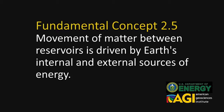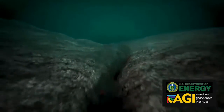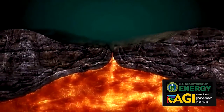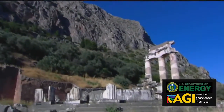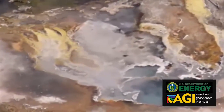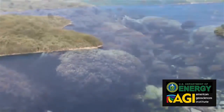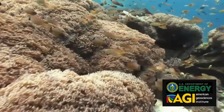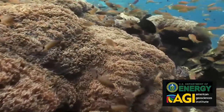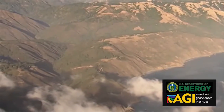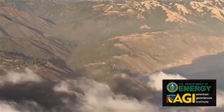Movement of matter between reservoirs is driven by Earth's internal and external sources of energy. These movements are often accompanied by a change in the physical and chemical properties of matter. Carbon, for example, occurs in carbonate rocks such as limestone, in the atmosphere as carbon dioxide gas, in water as dissolved carbon dioxide, and in all organisms as complex molecules that control the chemistry of life. Energy drives the flow of carbon between these different reservoirs.